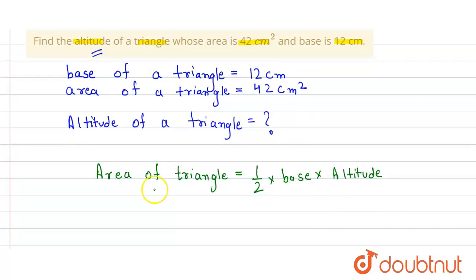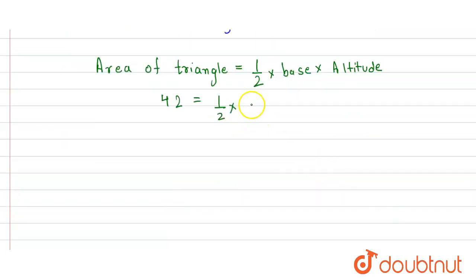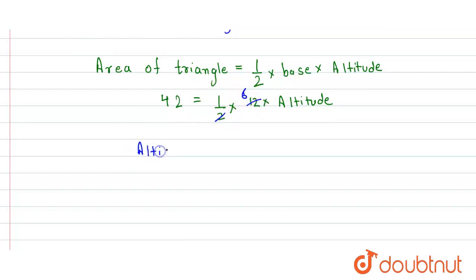So now we simply put the values. The area of the triangle is 42, so here it is 42 is equal to half into 12 into altitude. Now we solve it. This 2 cancels with 12 and we get 6. So the value of altitude will be equal to 42 divided by 6.